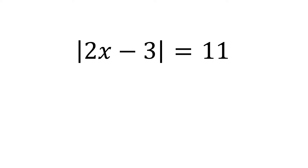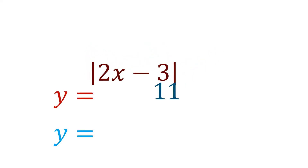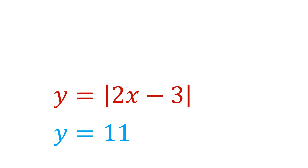In this first example, we have the absolute value of 2x minus 3, and that's equivalent to 11. So what we're going to do in order to graph this equation is to split it up into the left side and the right side, and we're going to take each side and set it equal to y. So now we have two separate equations: y equals the absolute value of 2x minus 3, and y equals 11.